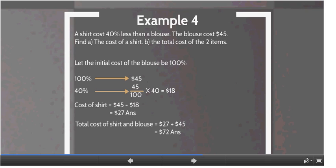Find a) The cost of a shirt and b) The total cost of the two items. We let the initial cost of the blouse be 100%, so therefore 100% represents $45. And we are interested in finding 40% because the shirt costs 40% less than a blouse. So 40% is equivalent to 45 divided by 100 times 40, which is $18.